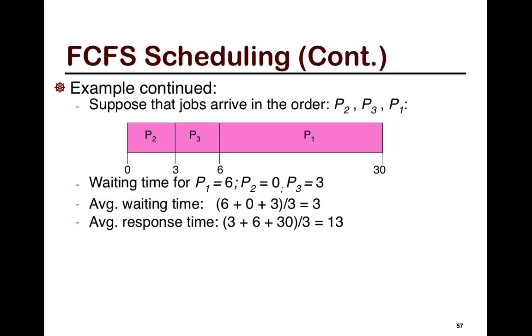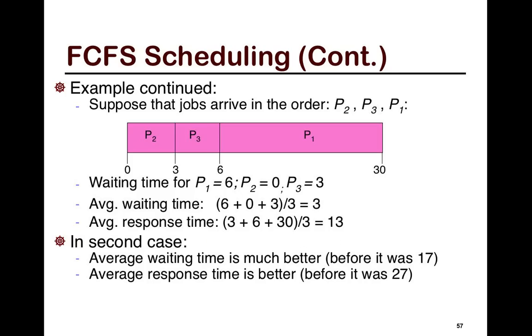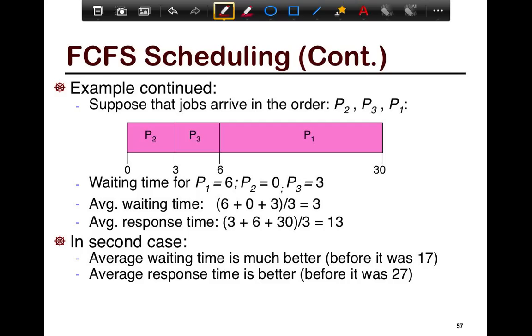Another example, looking at the same example: in this case what we're going to do is change the order a little bit. Let's say that the order of the jobs was P2, P3, and P1. So in the first case, we had P1, P2, P3. In this case, we have jiggled up the orders a bit, so we have P2, P3, and P1. In this case, if you look at the waiting time, P2's is 0, P3's is 3, and P1's is 6. So your average wait time is only 3.